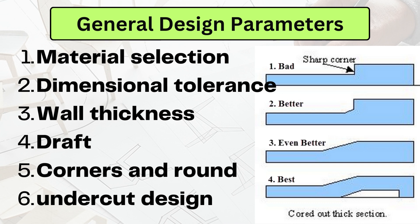In general design parameters, material selection plays a very important role. Different plastics have different types of load-carrying capacity and different mechanical and physical properties that can significantly impact the performance of the final product. For example, some plastics are more durable and resistant to impact while others are more heat resistant, so different plastics have different properties.